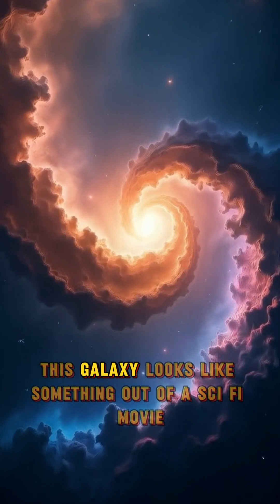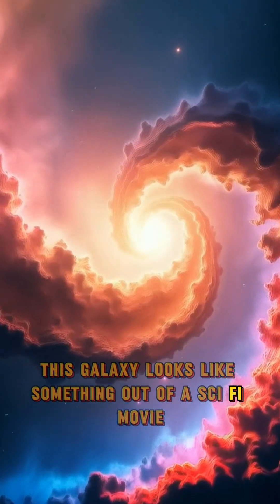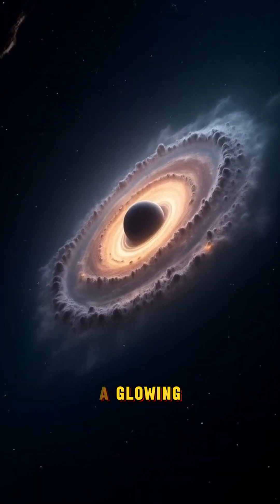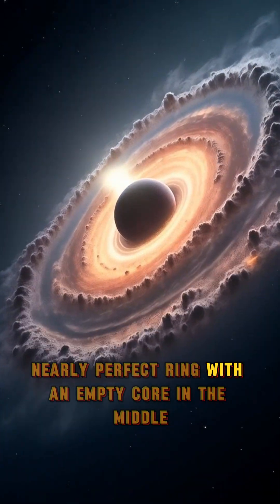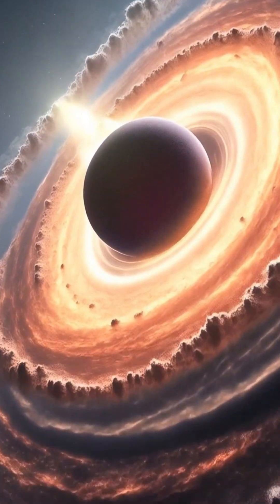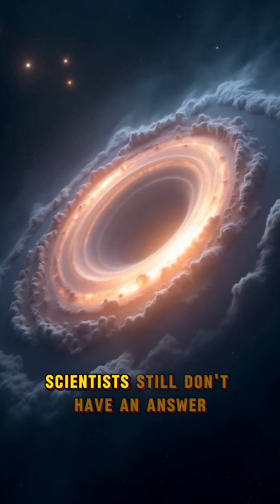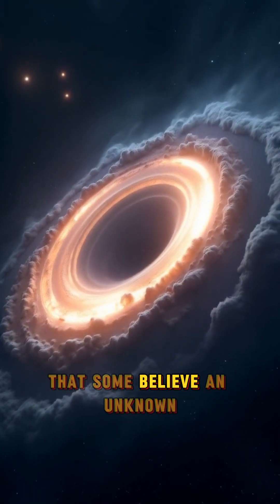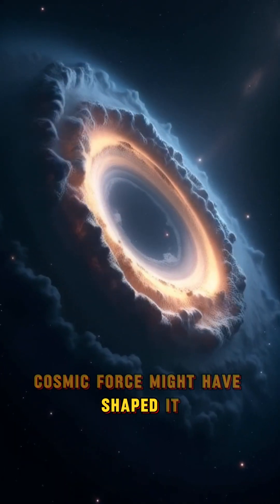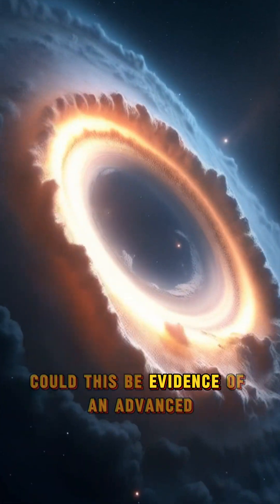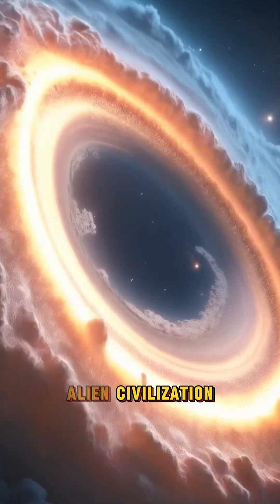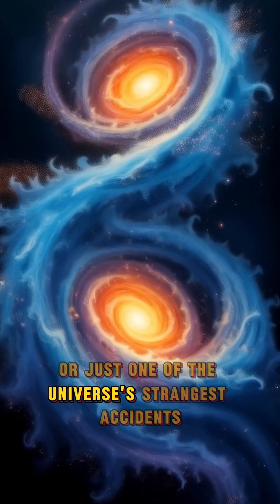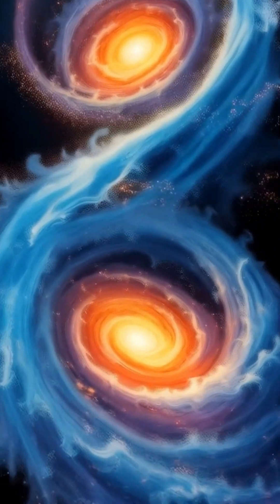From Earth, this galaxy looks like something out of a sci-fi movie. A glowing, nearly perfect ring with an empty core in the middle. But how did it form? Scientists still don't have an answer. Its structure is so flawless that some believe an unknown cosmic force might have shaped it. Could this be evidence of an advanced alien civilization? Or just one of the universe's strangest accidents? No one knows.